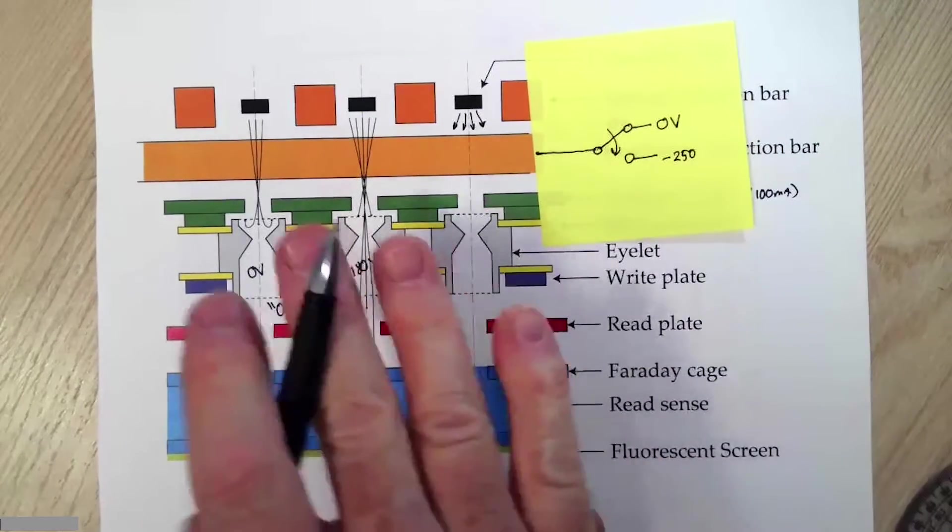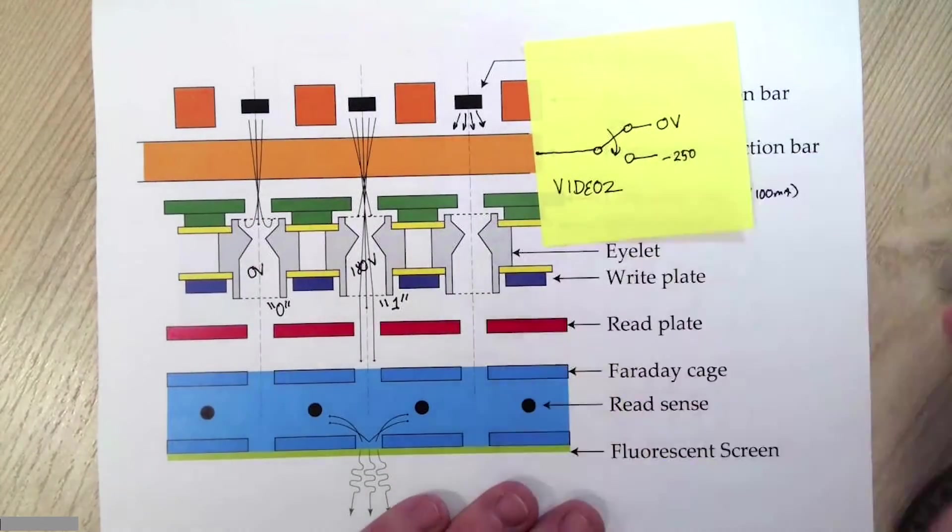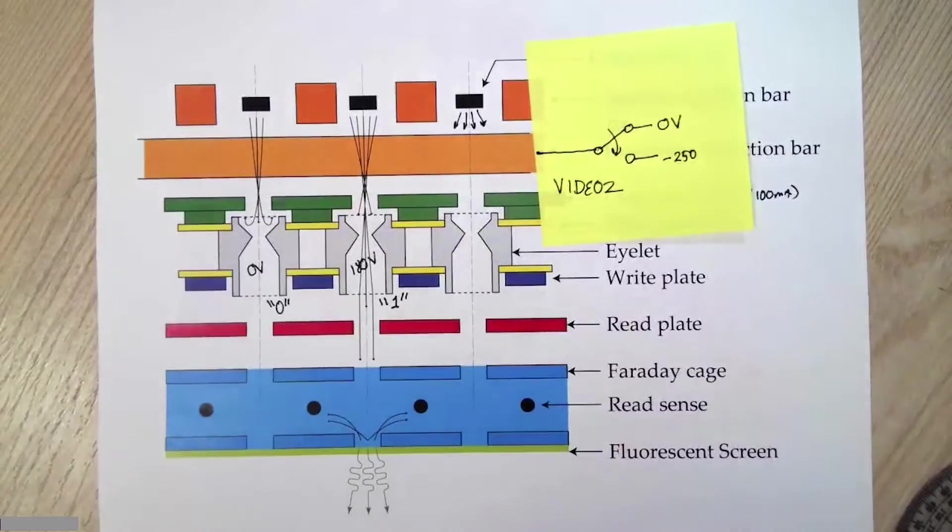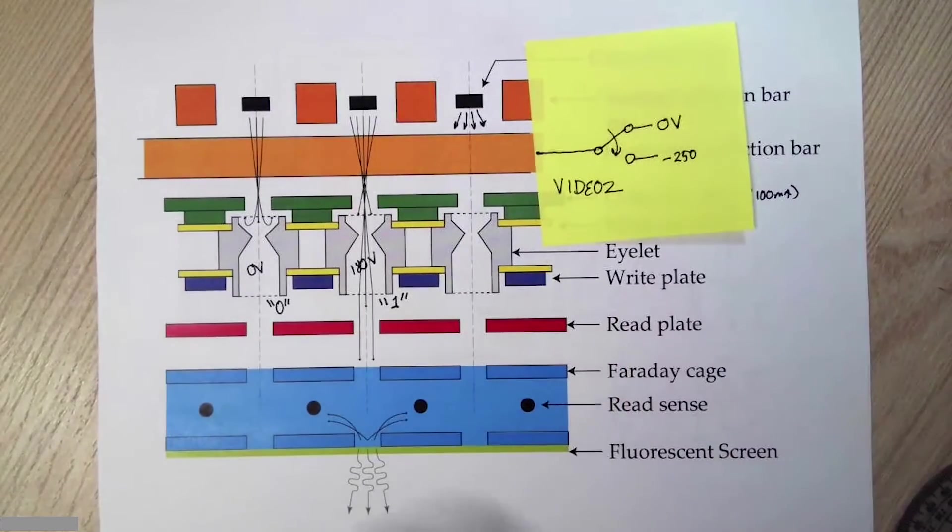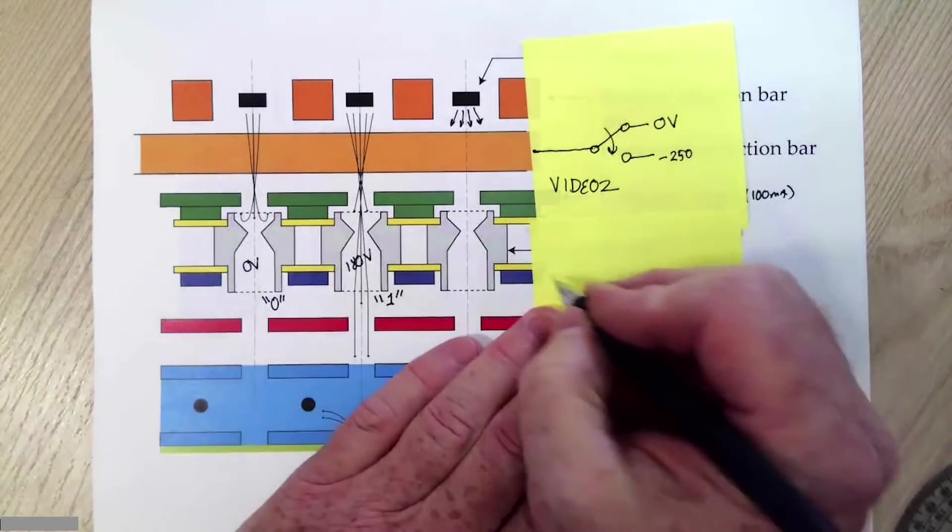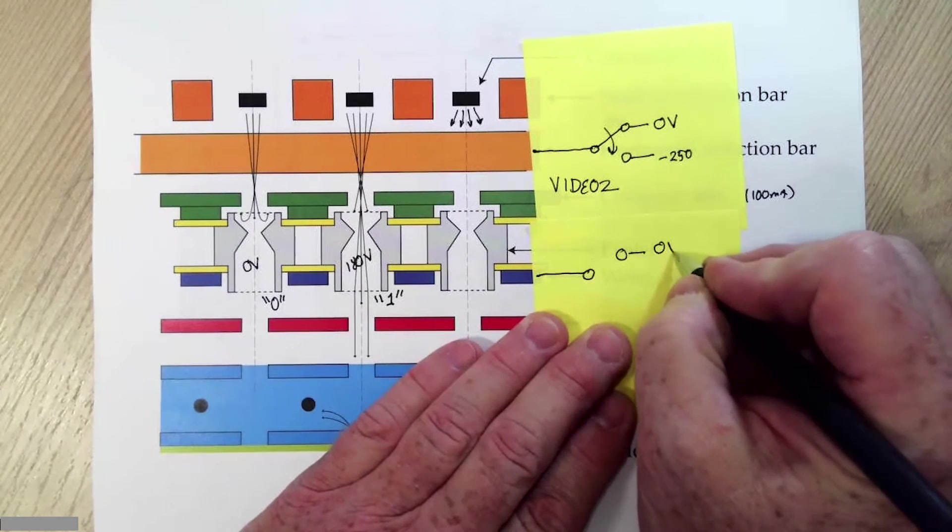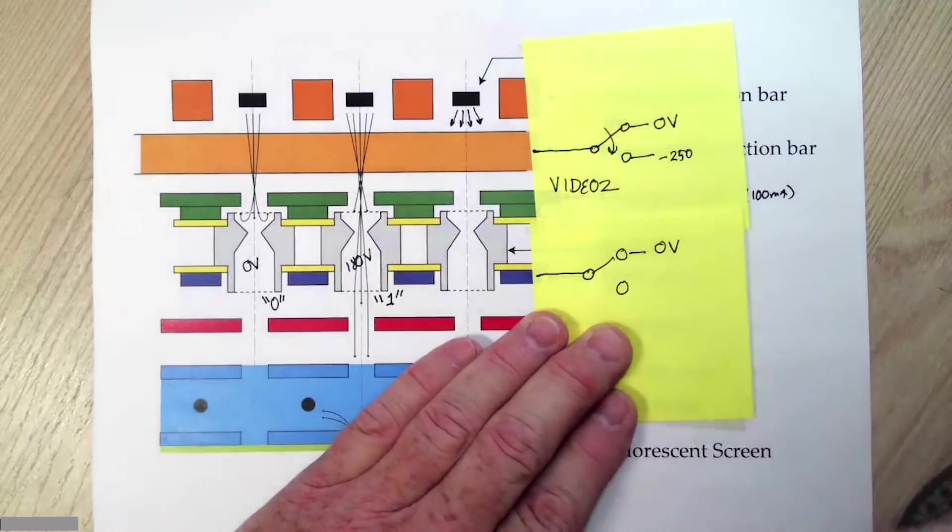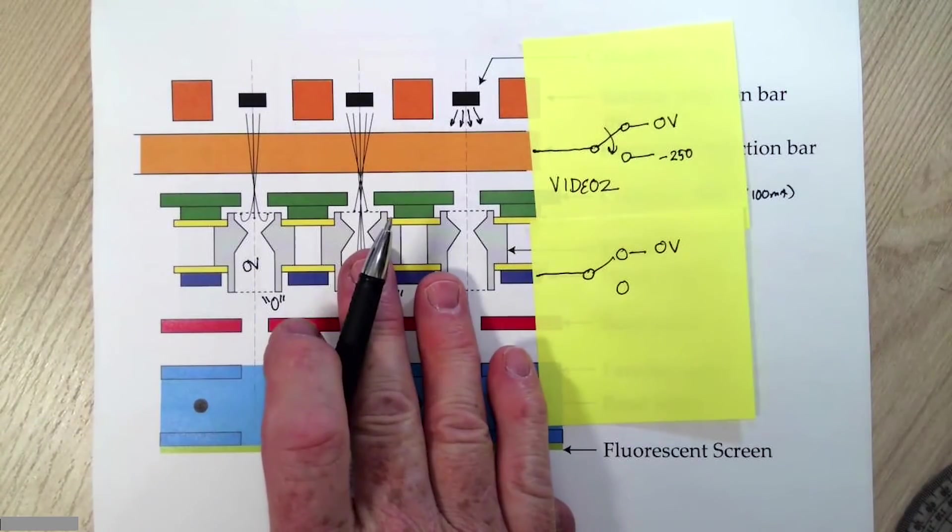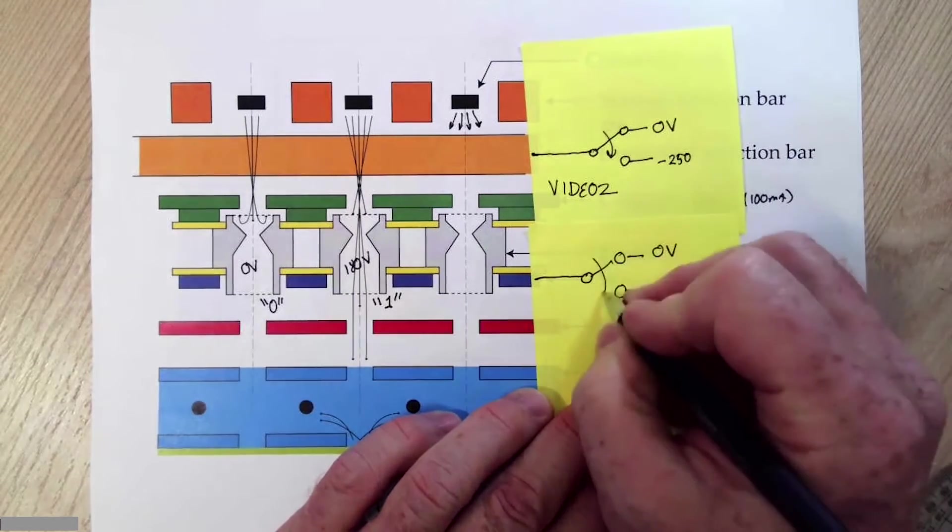Now the selection process and how I address which bar does what will come into play in video two. Let's say we want to do a write. I want to use the write plate now. The idle potential for the write plate is zero volts, but the process of writing, we will need to pulse it. So let's connect the write plate to a switch. Again, the idle potential is zero volts, that's the normal state. In the process of writing, what I do is deselect all the bits except for the one I'm interested in, and then I pulse the write plate to positive 360 volts.